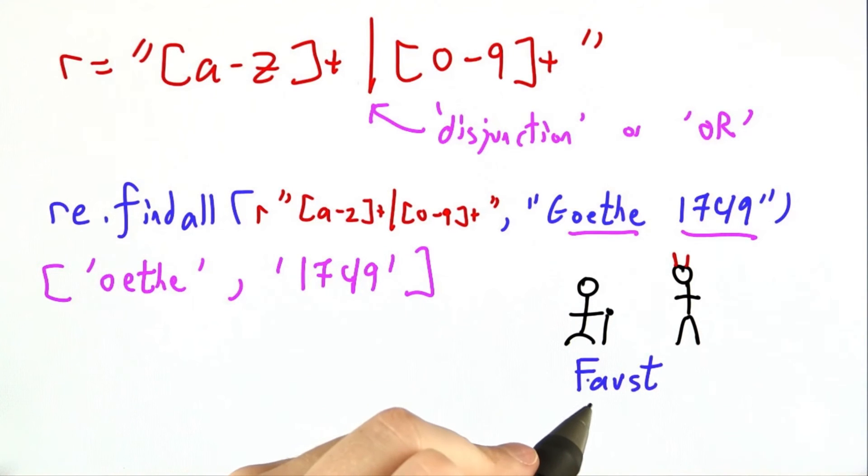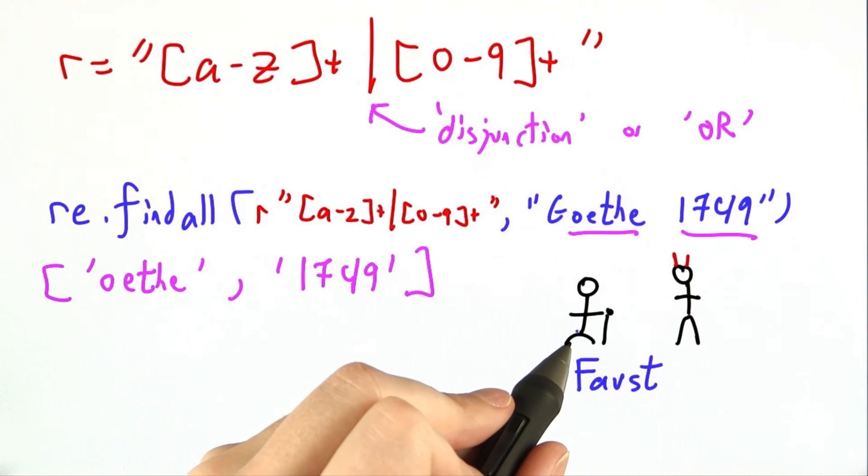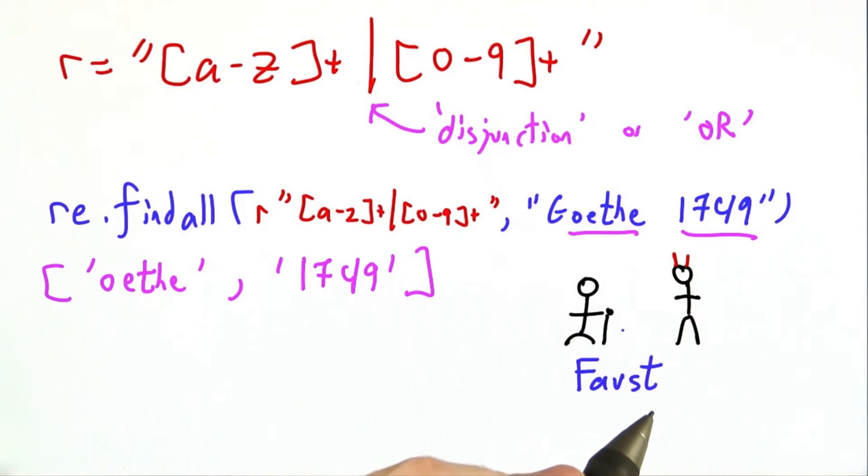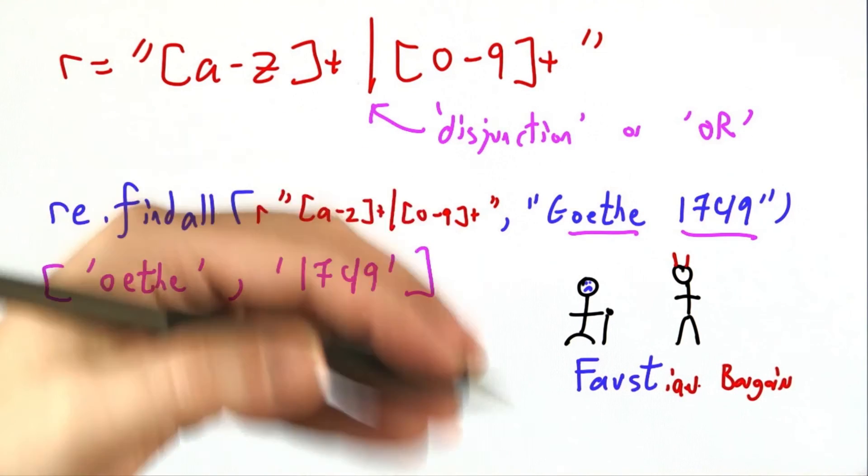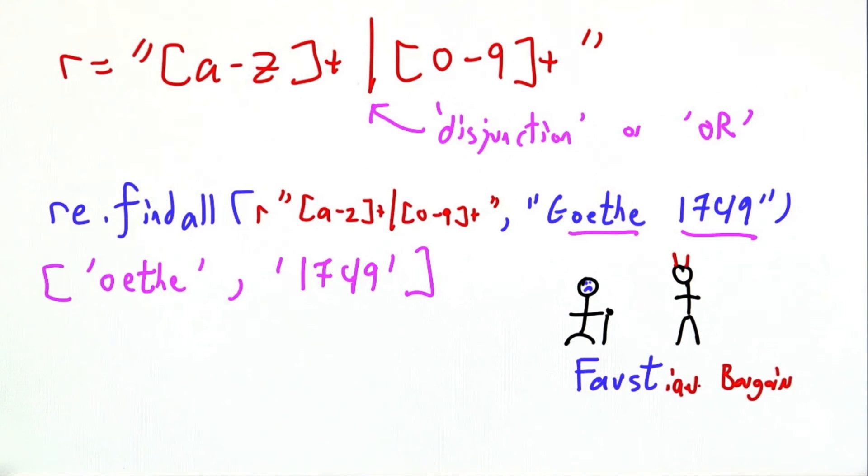One of Goethe's most famous works is Faust, in which an old man makes a literal deal with the devil. In an incredible surprise move, it does not go particularly well. And in fact, the phrase Faustian bargain has entered the modern English lexicon, meaning a deal that you really don't want to make or where you're giving up too much to get something.